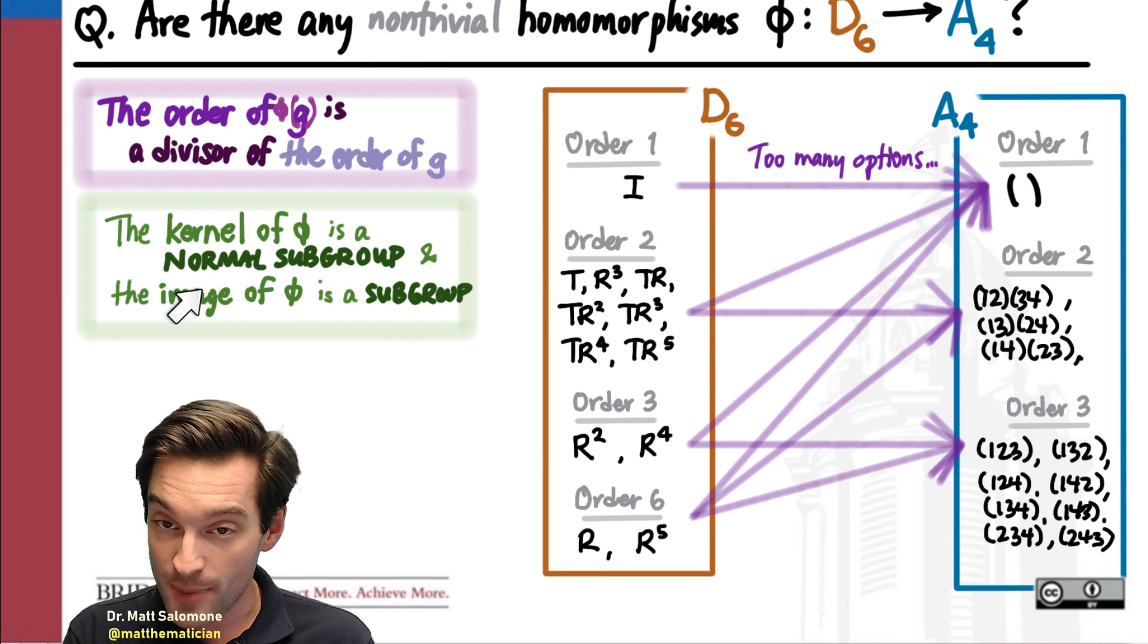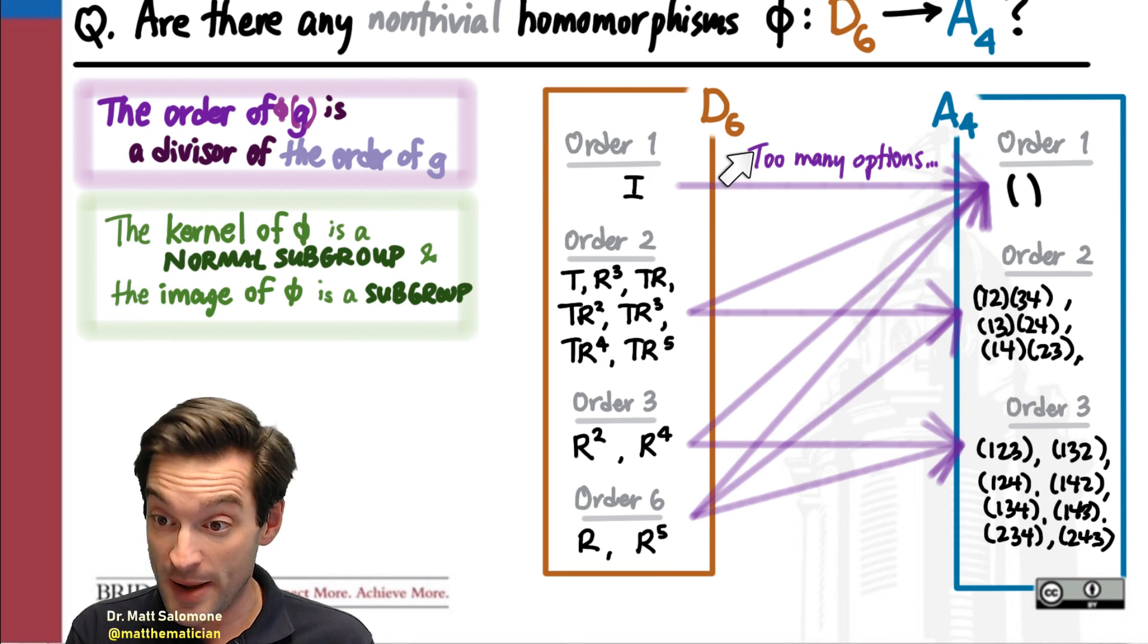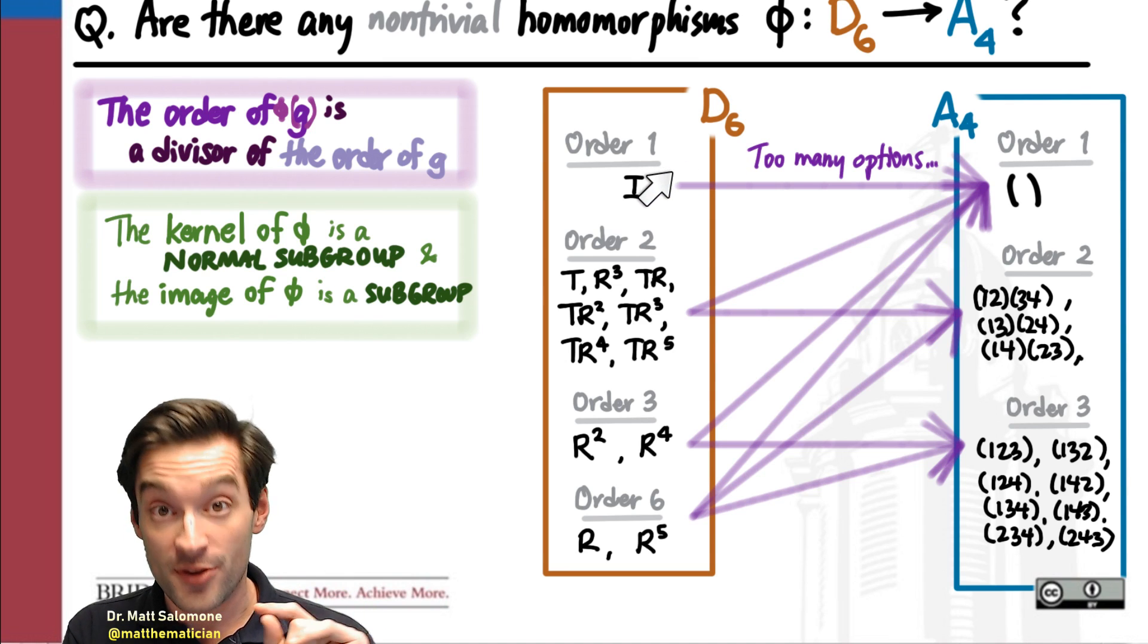And this is the key pair of observations, that the kernel of a homomorphism, which is a subgroup of its domain, is always a normal subgroup of that domain.